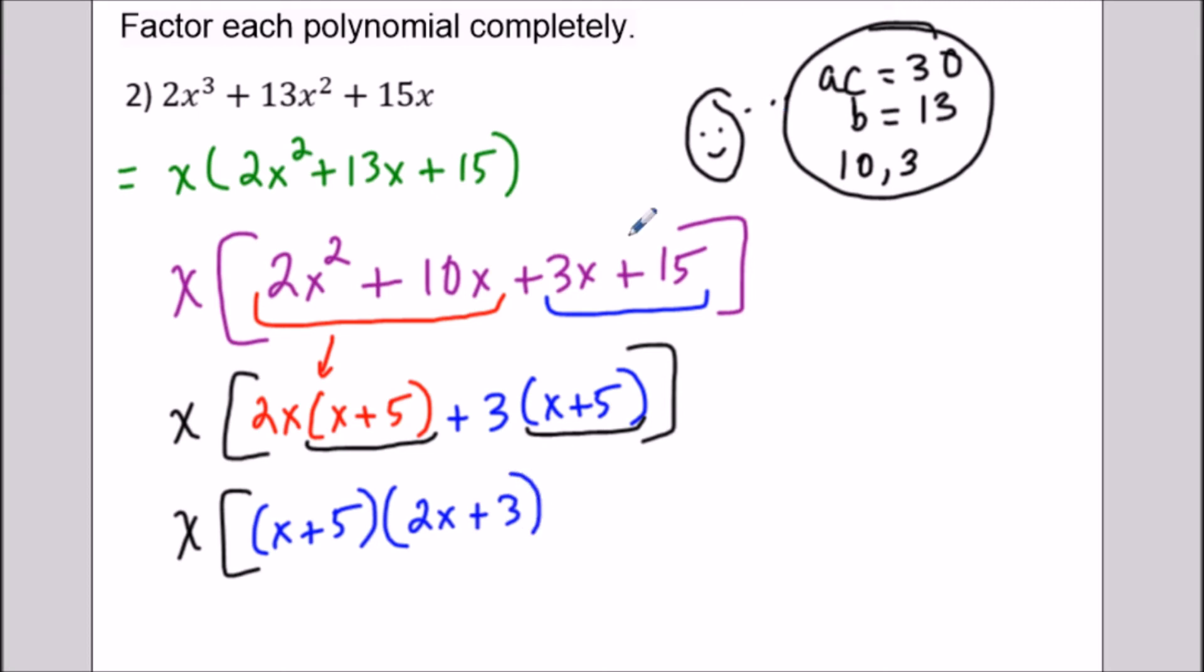So we'll just write this a little bit neater. We'll write it without the brackets. They're not necessary. So we have x(x + 5)(2x + 3). So this is our solution to the second question.